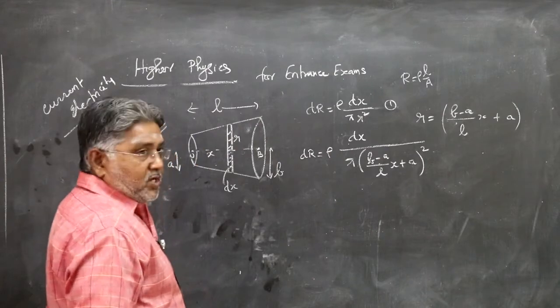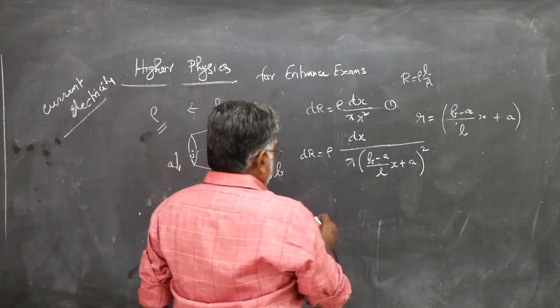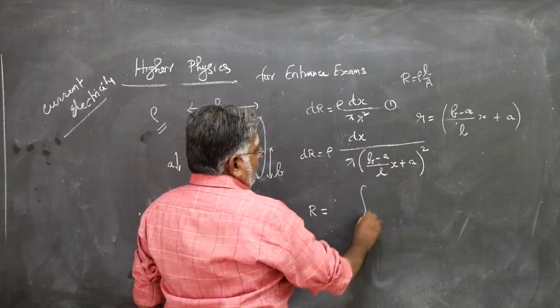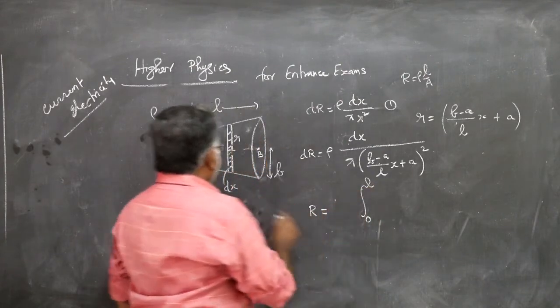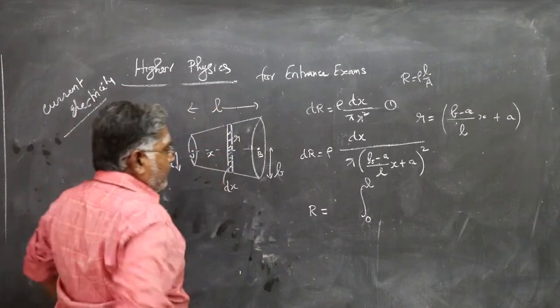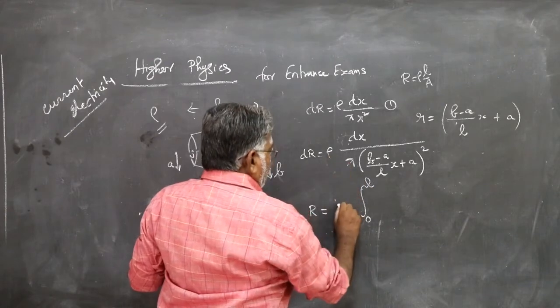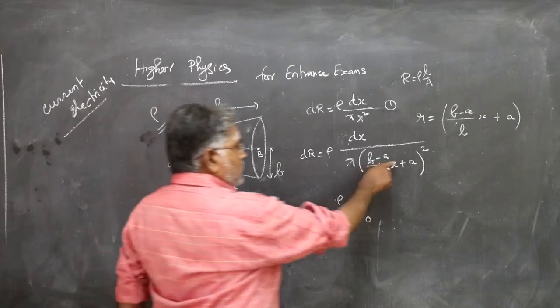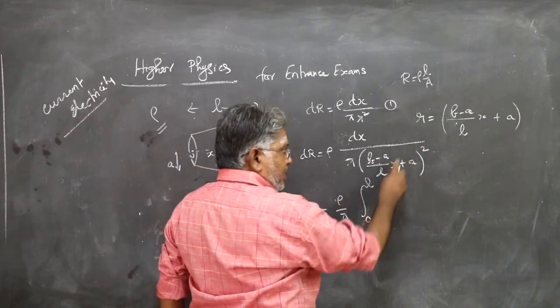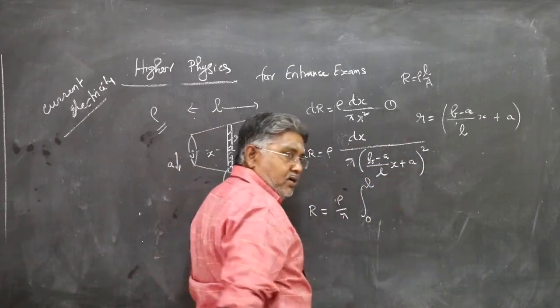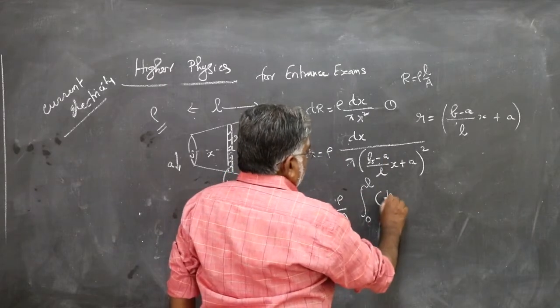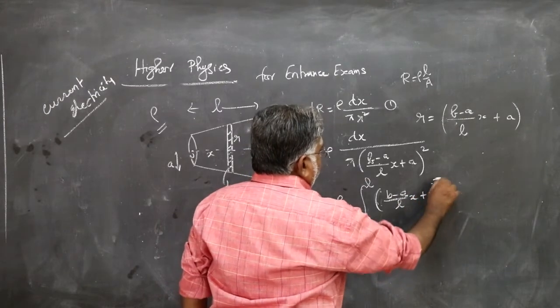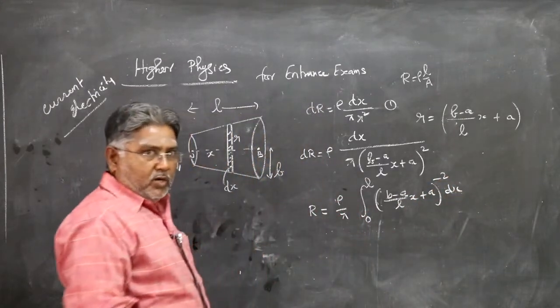If you want to find the resistance of the complete cone, integrate from 0 to L, because x can vary from 0 to L. Rho by pi are constants, you take outside this integration symbol. This plus 2 in the denominator, you take this term to the numerator just for convenience. So (B minus A by L into x plus A) power minus 2 dx. It is a definite integral.